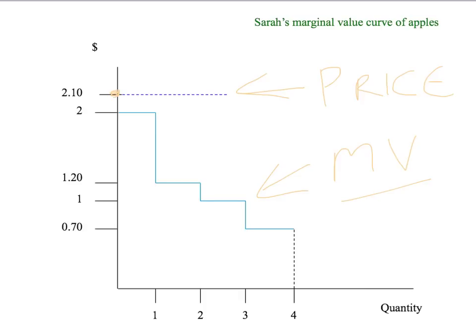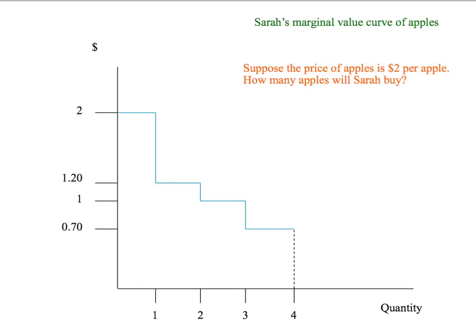We can go further than that. We know that for every price above $2, Sarah is not going to buy any apples — she's only willing to pay at most $2 for a first apple. She's not going to pay $2.05, $2.10, $4, or $8. Any price above $2, Sarah will buy no apples. So we know that Sarah's demand curve is this vertical yellow line here, at least above the price of $2 per apple.